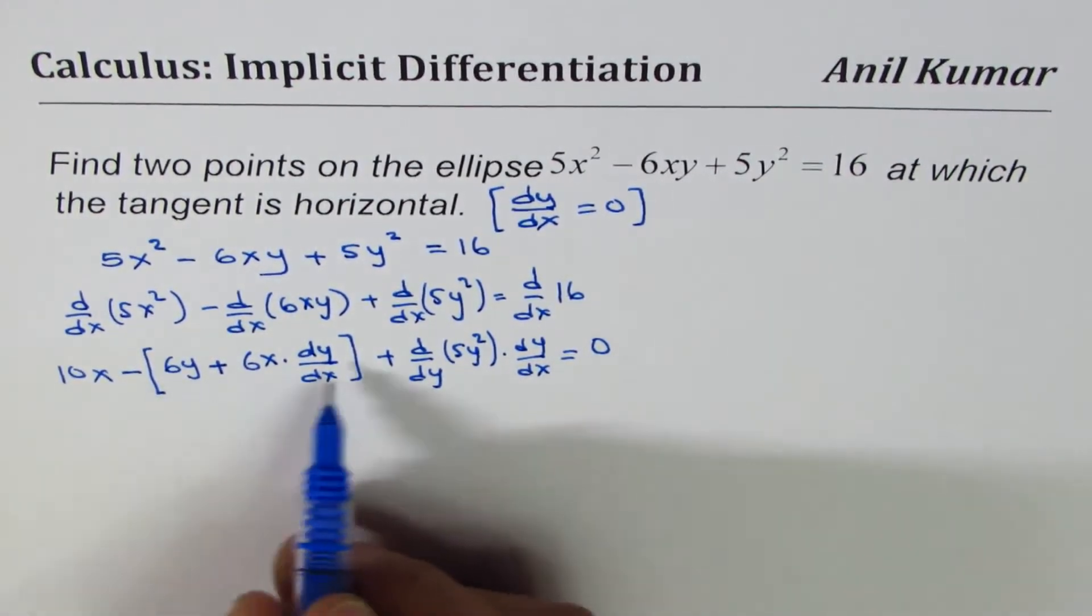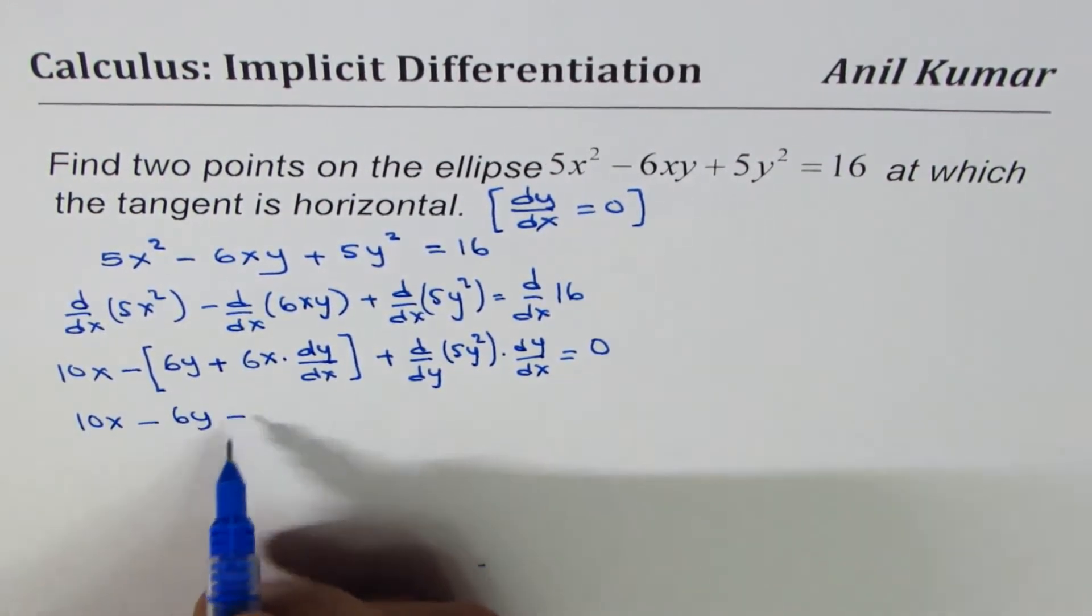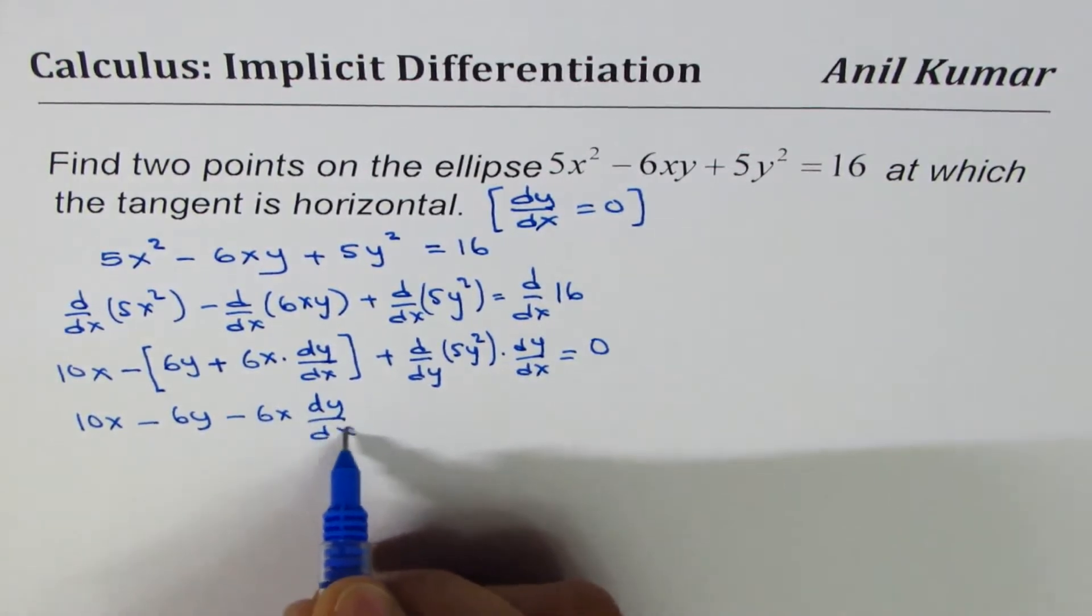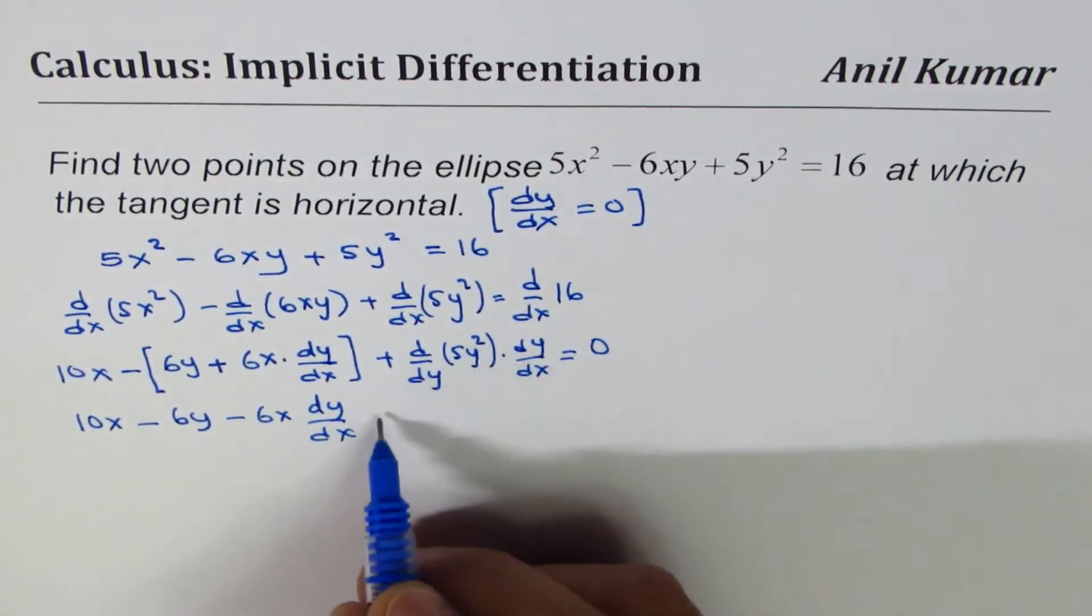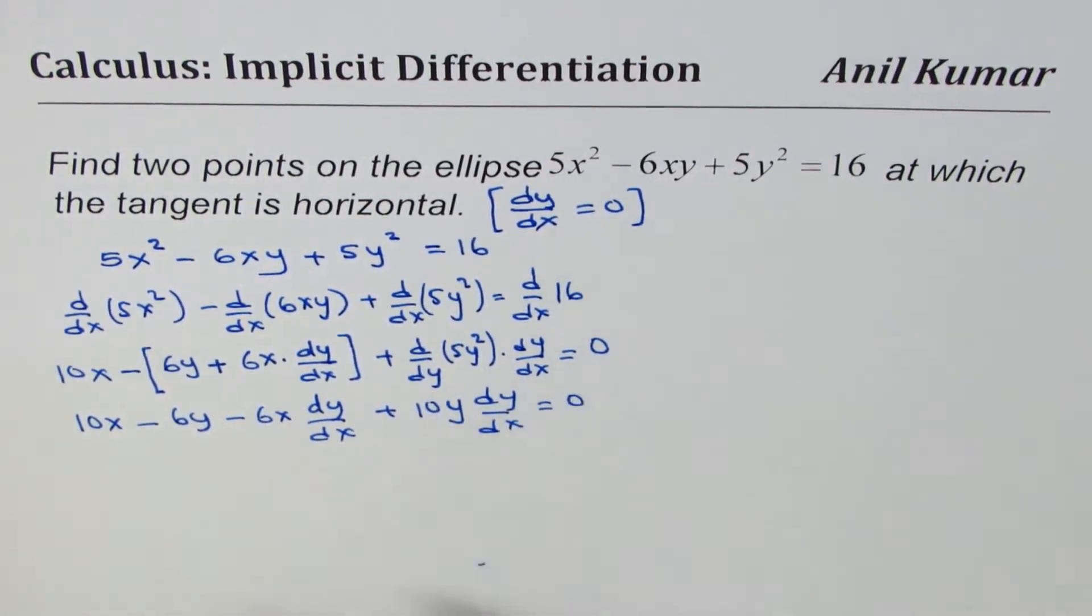Now let's rewrite, simplify this a bit. So we get 10x - 6y - 6x(dy/dx). Here the derivative is plus 2 times 5 is 10, so we get 10y(dy/dx) = 0.